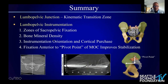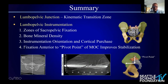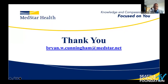In summary, the lumbopelvic junction represents a very formidable kinematic transition zone for the success of spinal instrumentation. When thinking about instrumentation, consider these four points: the zones of pelvic fixation available, how bone mineral density changes throughout the various zones, the orientation of instrumentation and whether cortical purchase is obtained, and whether instrumentation in the iliac wing is projected anterior to the pivot point or MOC — as this improves overall stabilization.